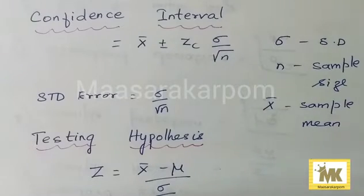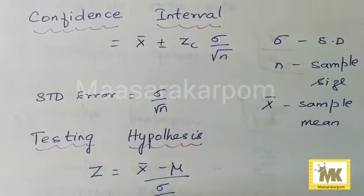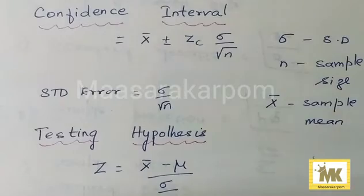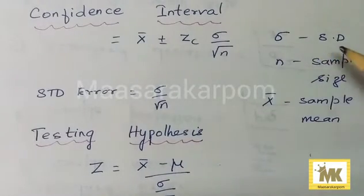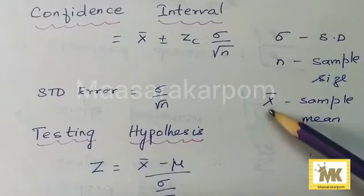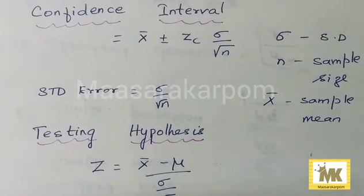Confidence interval formula is x bar plus or minus Zc times sigma by root N. Zc is the value at 99% level of confidence or 98% level of confidence. Sigma is the standard deviation of the population, N is sample size, and x bar is sample mean.